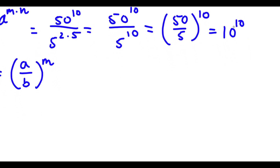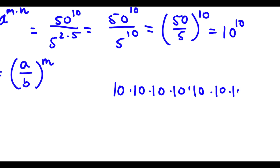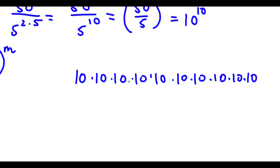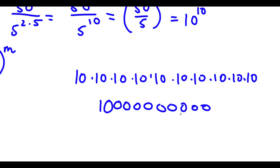And now we can actually simplify this. 10 to the power of 10 is the same thing as 10 multiplied by itself 10 times. So I have 10 times 10 times 10 times 10 times 10 times 10 times 10 times 10 times 10 times 10. Now we have 10 zeros here, meaning this is the same thing as 1 with 10 zeros. So our answer here is going to be 10 billion. So 10 billion is our answer to this problem.